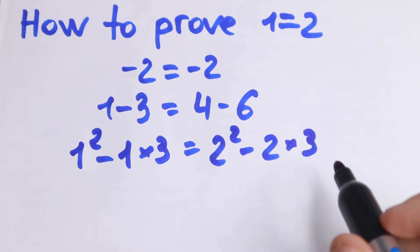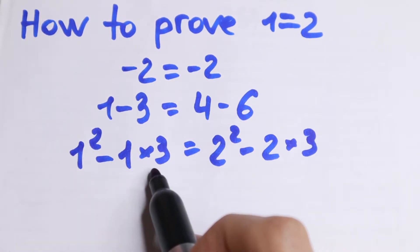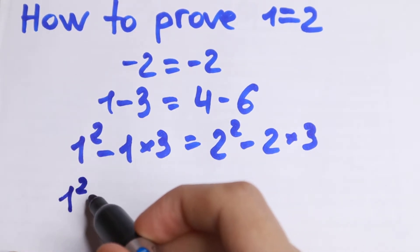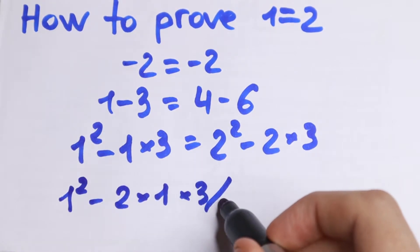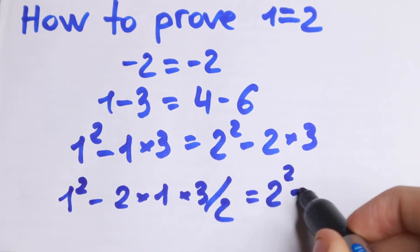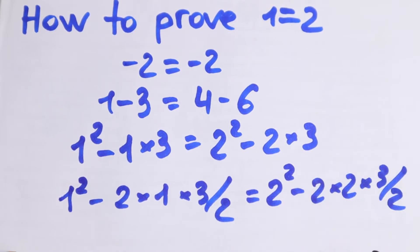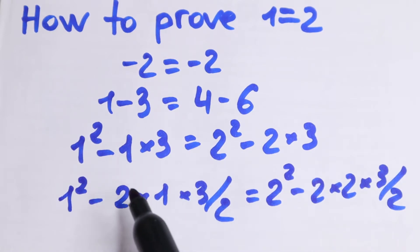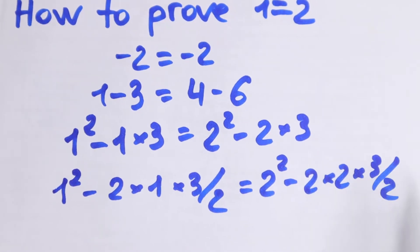So what are we going to do next? Let's multiply and divide by 2 for these elements. What we will have is: 1 squared minus 2 times 1 times 3 over 2, equal to 2 squared minus 2 times 2 times 3 over 2. I just multiply these by 2 and divide by 2, so if we cancel this, we will have the same as before on both sides. Nothing changes.